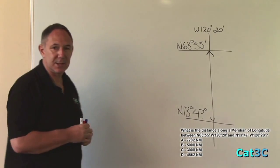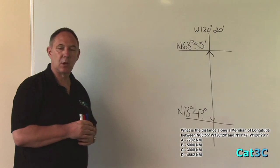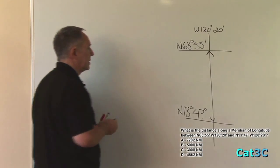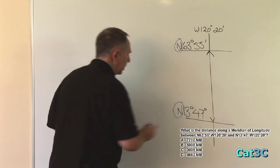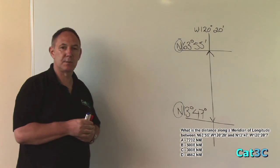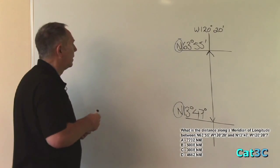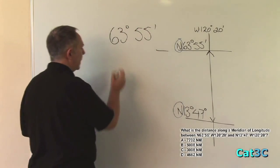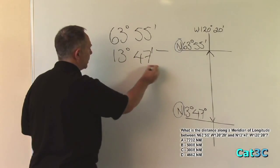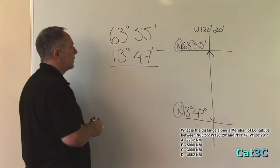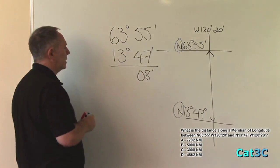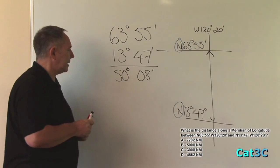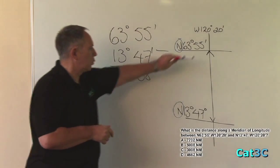In order to calculate the change of latitude as a distance, we must first find out what the change of latitude in degrees and minutes is. In order to do that, the first thing we check are the hemispheres — north and north. If both hemispheres are the same, then we subtract the lower number from the greater number. Therefore, we take 63 degrees 55 minutes and subtract from that 13 degrees 47 minutes. 55 minus 47 is 8 minutes, and 63 degrees minus 13 degrees is 50 degrees. This tells us that the change of latitude is 50 degrees and 8 minutes between these two points.